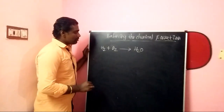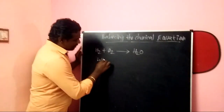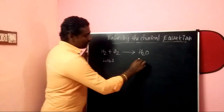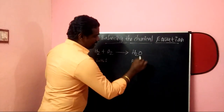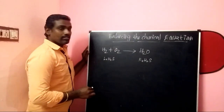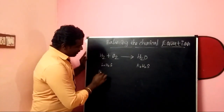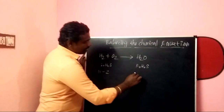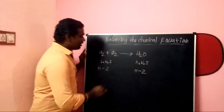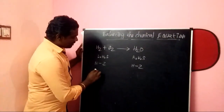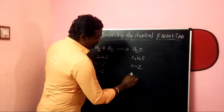So, to balance the equation first, let's look at the equation. Next, on the right hand side of the equation — for example, Hydrogen: the number of hydrogen is 2 on the right hand side, and on the left hand side of the equation, the number of oxygen is 2.